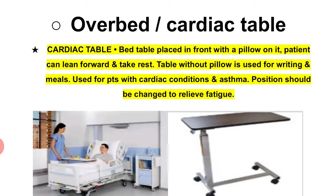Uske baad next item hai over bed table ya cardiac table. Over bed table ya cardiac table kya hoti hai: bed table place in front with pillow on it — patient when can lean forward take rest. Table without pillow is used for writing and meals. Use for patient with cardiac condition and asthma — position should be changed to relieve fatigue. Ye cardiac table patient ke saamne ki taraf rakhi jaati hai.